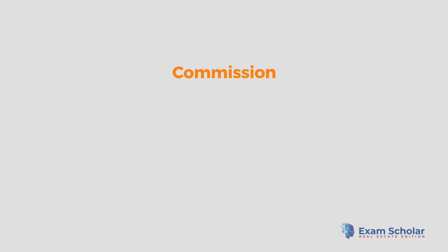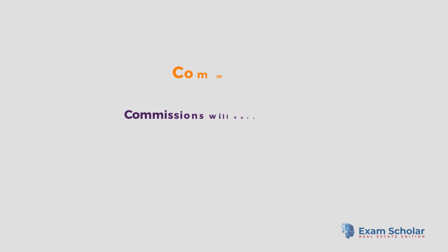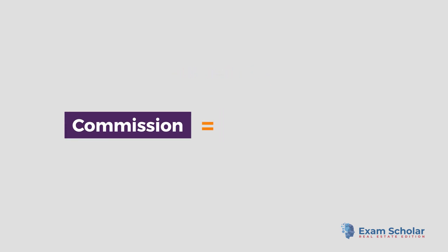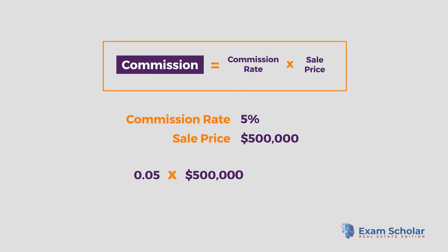The last main calculation that you need to know is how to calculate commission. Commissions will vary depending on your state and business, but the simple math will remain the same. To calculate a commission value, you just need a property's agreed commission rate and sale price. Then multiply the commission percentage by the sale price or property value to come to your gross commission value. For example, if the agreed commission percentage of a sale is 5% and the sale price is $500,000, you would multiply .05 by $500,000 to come to a commission of $25,000.